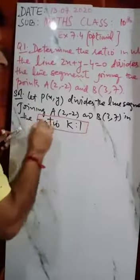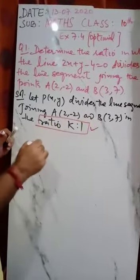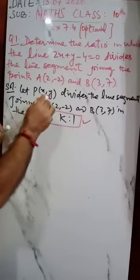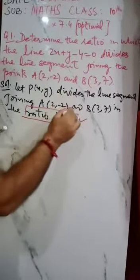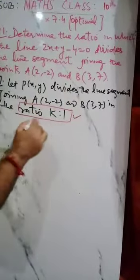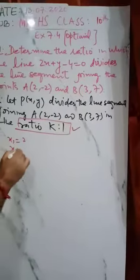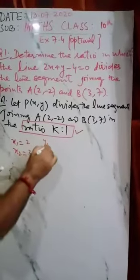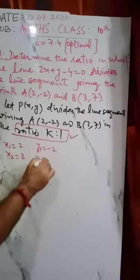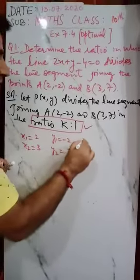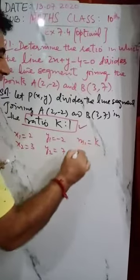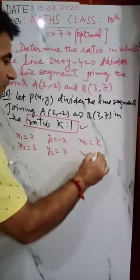Let the ratio be k is to 1, or P(x, y) is the point that divides A and B. So using section formula, x₁ is 2, x₂ is 3, y₁ is -2, y₂ is 7, m₁ is k, and m₂ is 1.